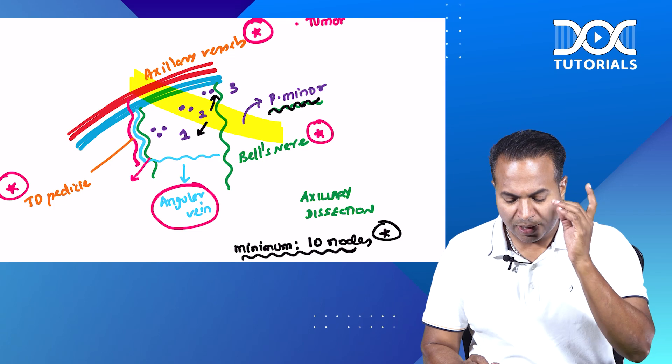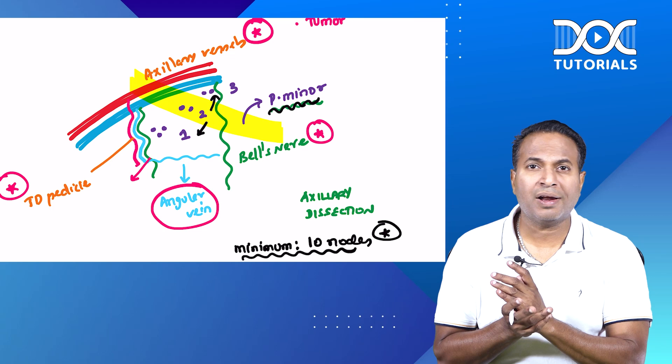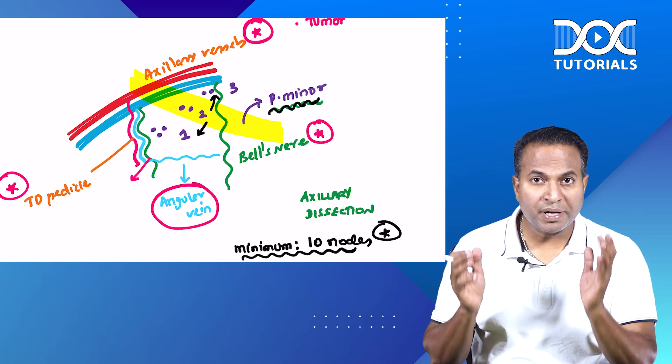Angular vein, bells nerve, thoracodarsal pedicle, axillary vessels. In this rectangular area, we have to remove all the fibro-fatty structures which contains around 10 nodes minimum.